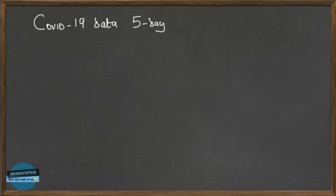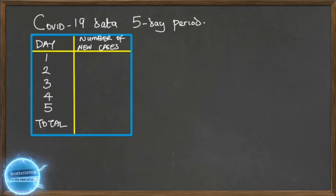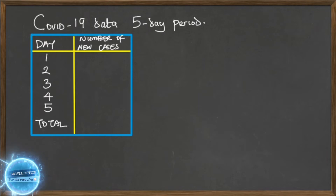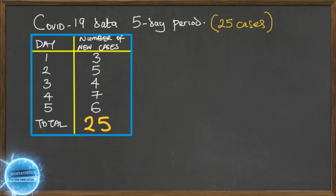Consider this data: the number of new COVID-19 cases admitted into an isolation center in Lafia, Nasarawa State, Nigeria. On days one and two we had three and five new cases respectively. On days three to five we had four, seven, and six new cases, giving a total of 25 cases admitted over the five-day period.